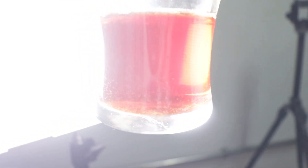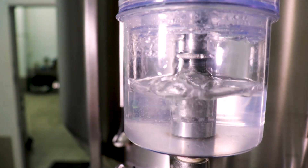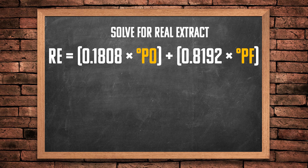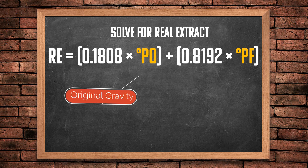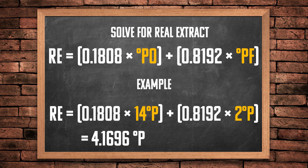Now we come to real extract, which is the measurement of the difference in density of sugars before and after they are fermented. This is important for our caloric calculation. To find the real extract value we use the following equation: RE equals 0.1808 multiplied by PO (original gravity in Plato), plus 0.8192 multiplied by PF (final gravity in Plato). Plugging in our numbers: RE equals (0.1808 × 14) plus (0.8192 × 2), which gives us 4.1696 degrees Plato — the actual amount of sugars that were fermented.